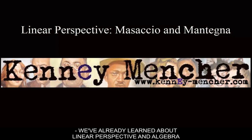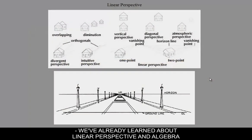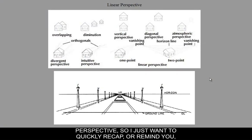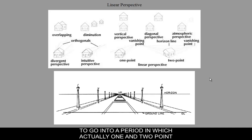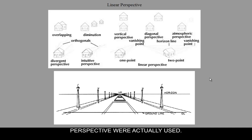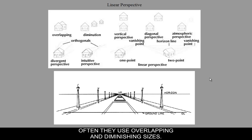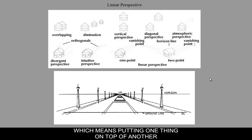We've already learned about linear perspective and all the different perspectives, so I just want to quickly recap some of the things used before, because we're going into a period in which one- and two-point perspective are actually used. In Giotto and Cimabue's paintings, they often use overlapping and diminishing sizes, vertical perspective — putting one thing on top of another or diagonally — which creates space.